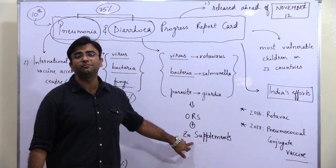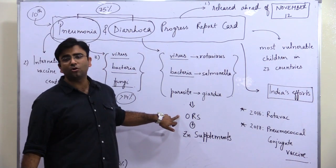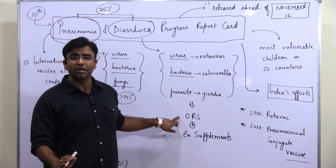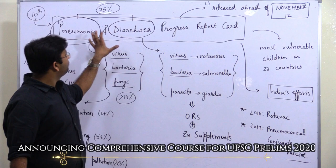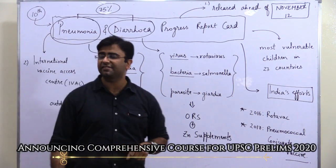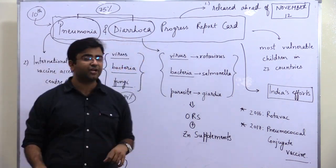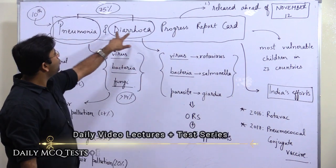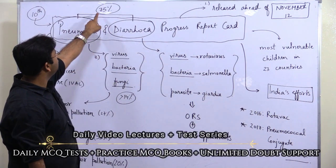So you provide them zinc supplement and oral rehydration solution. This report card was published by International Vaccine Access Center because pneumonia and diarrhea account for total 75% of children deaths around the world.